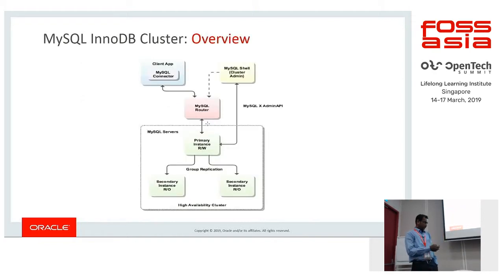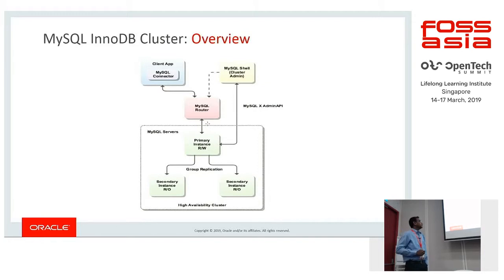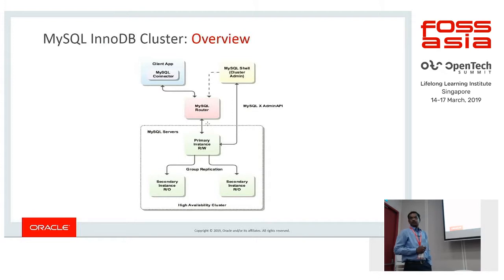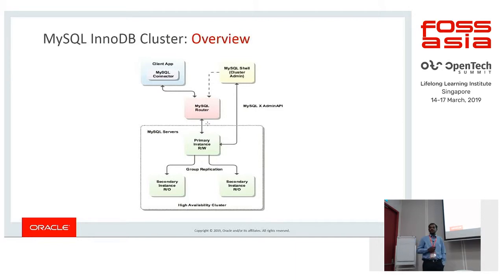Let's see the InnoDB Cluster architecture. The first and backbone of InnoDB Cluster is the group replication part. There is a primary instance which is the primary master — that's the read-write instance — and there are two secondaries. This means I need a minimum of three servers to set up MySQL InnoDB Cluster. The second component is the MySQL Router, which lies in between the application and the server part.